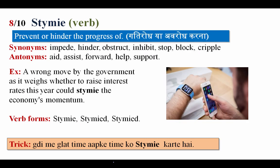The next word is stymie, meaning to obstruct or block something — kisi cheez ko rokna, gatirod karna. Synonyms: impede, hinder, obstruct, inhibit, stop, block. Antonyms: aid, assist, forward, help, support. Example: A wrong move by the government as it weighs whether to raise interest rates this year could stymie the economic momentum. Word forms: stymie, stymied, stymied.